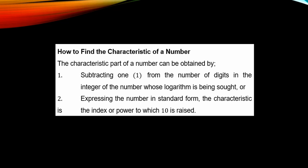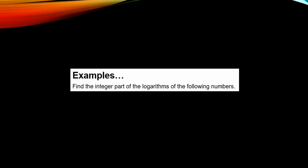To find the characteristic of a number, there are two methods. The first method is subtracting one from the number of digits in the integer part of the number whose logarithm is being sought. Or, you express the number in standard form — the characteristic is the index of the power to which 10 is raised.